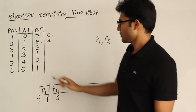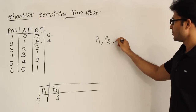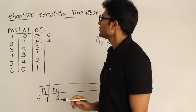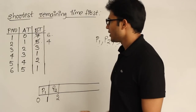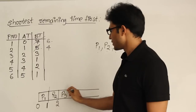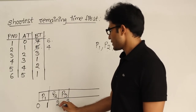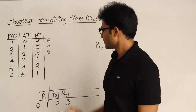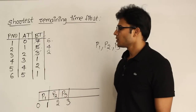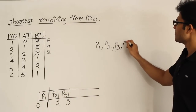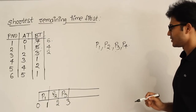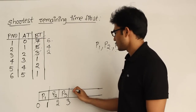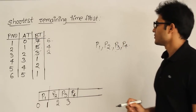By time 2, one more process has arrived: P3, with a burst time of 3. Now I have P1, P2, and P3 available. The shortest among them is P3 with burst time 3, so I schedule P3 for 1 unit. After running P3 for 1 unit, its remaining time is 2 and the time is now 3. At time 3, P4 arrives, so I now have P1, P2, P3, and P4. P4 has the minimum burst time, so P4 is chosen next.